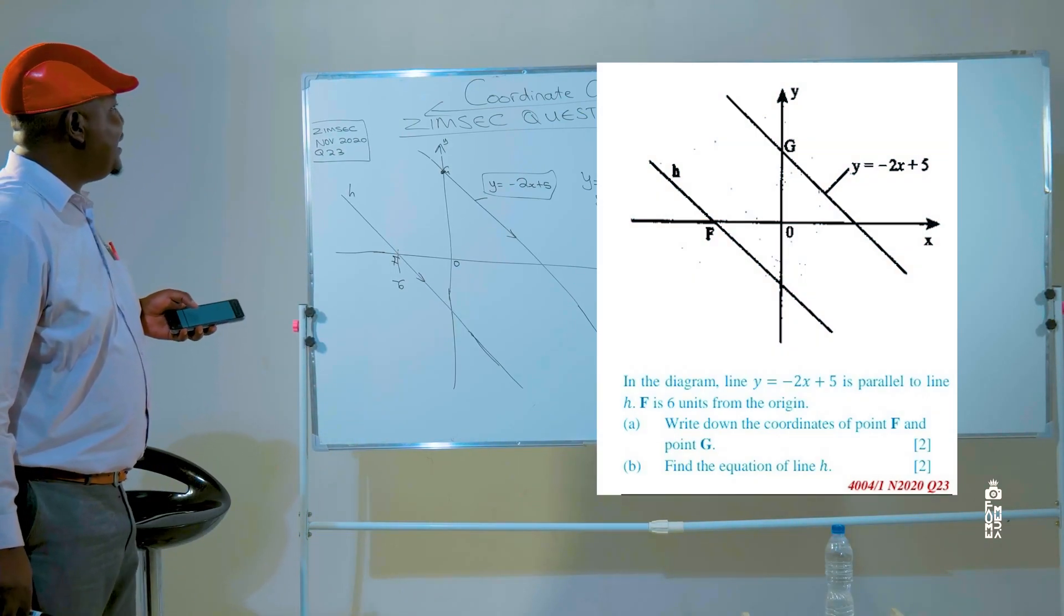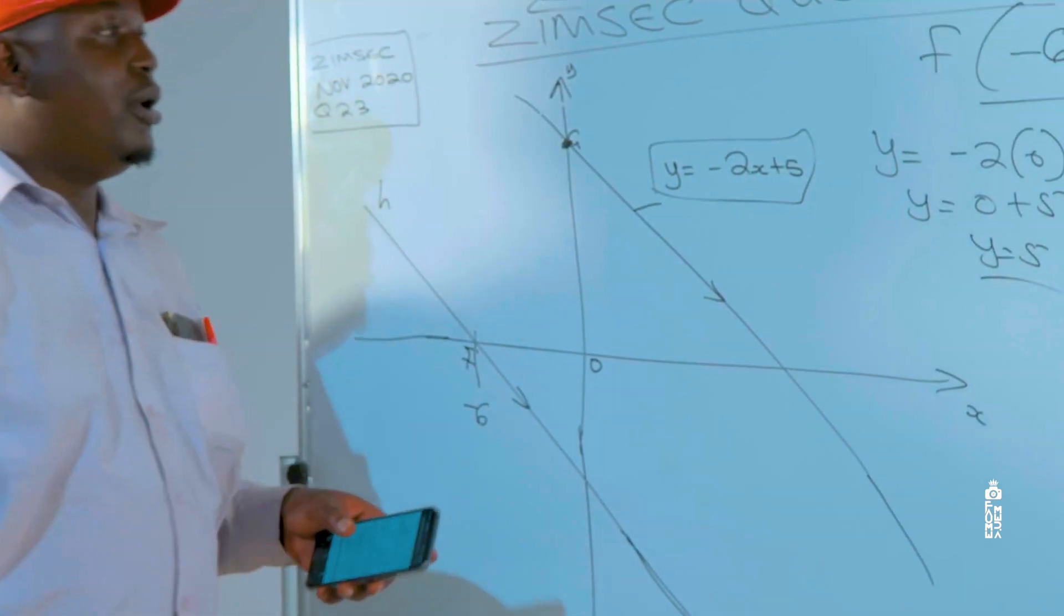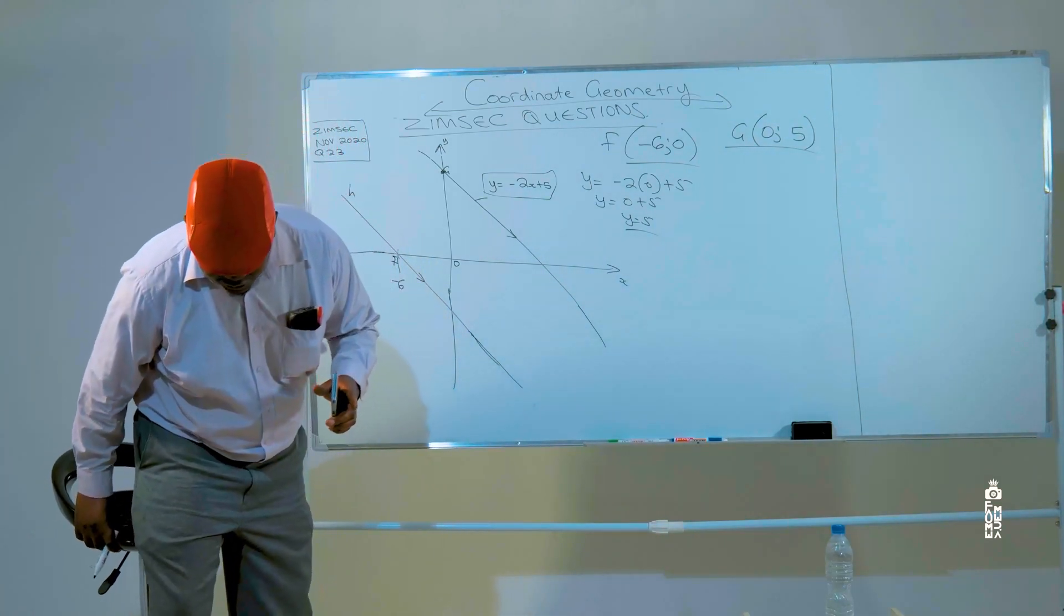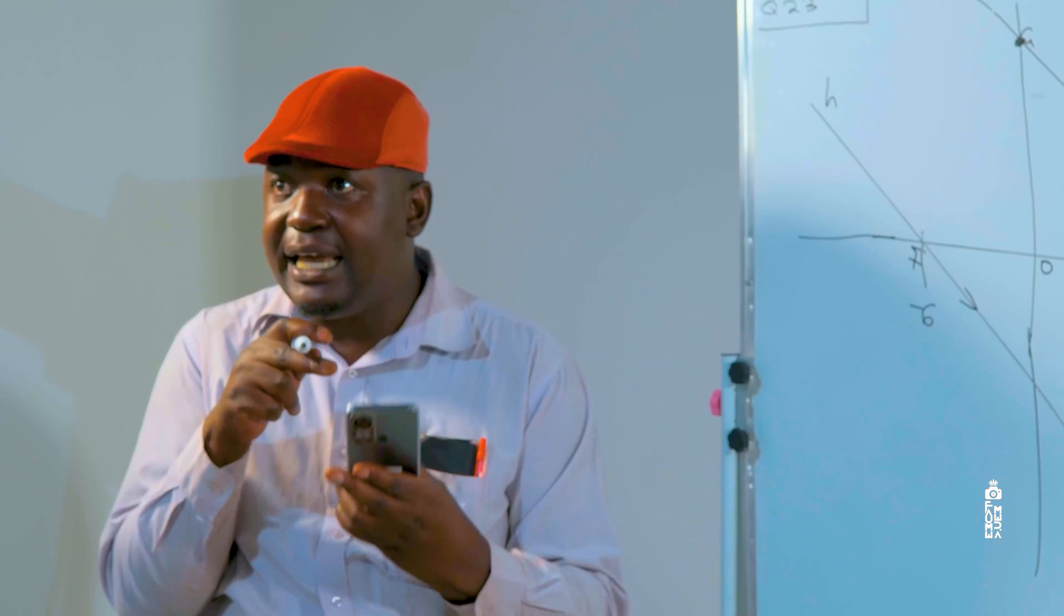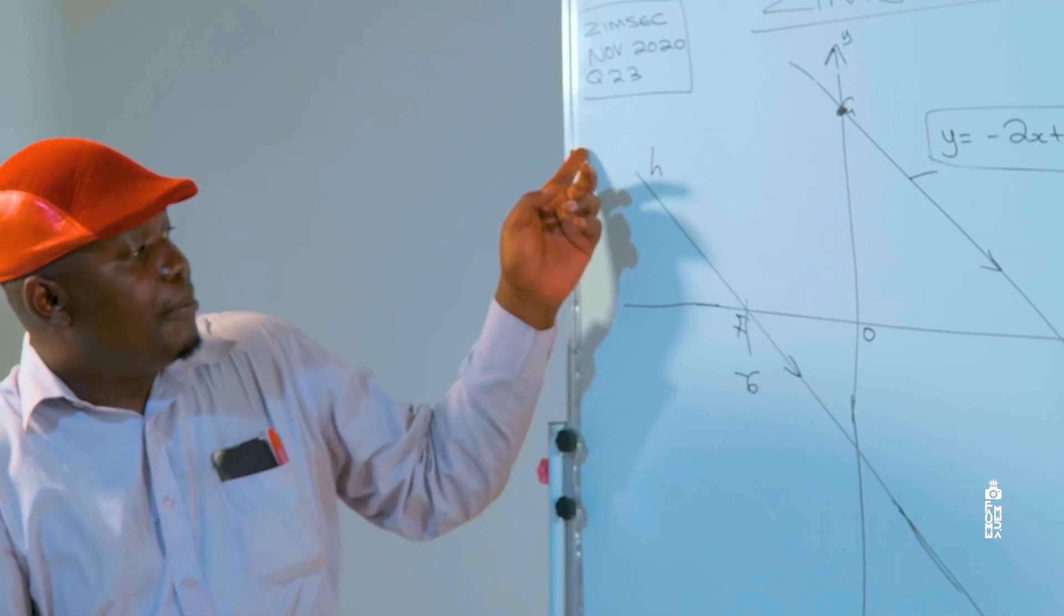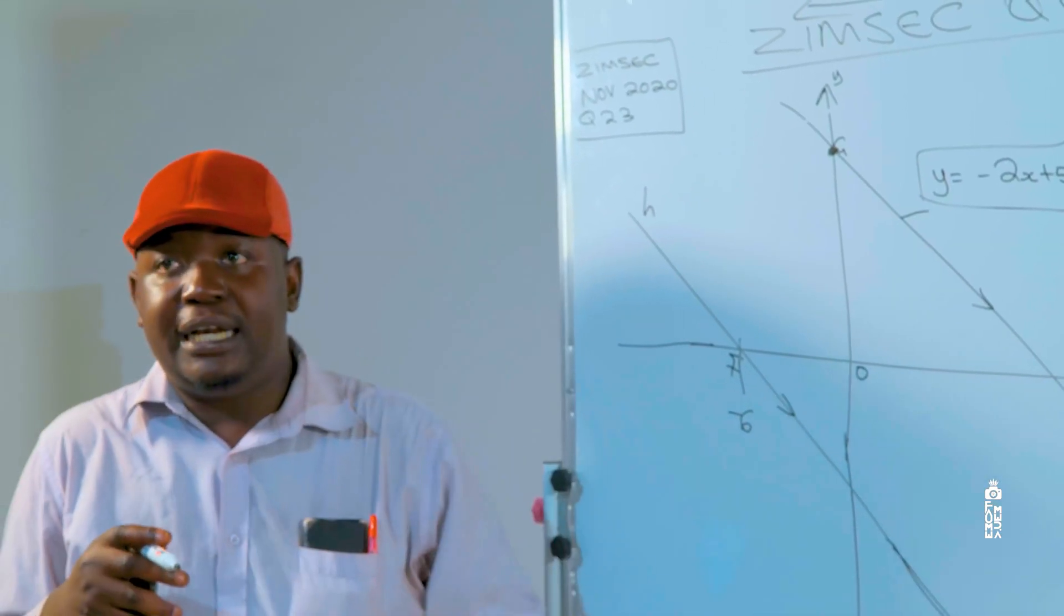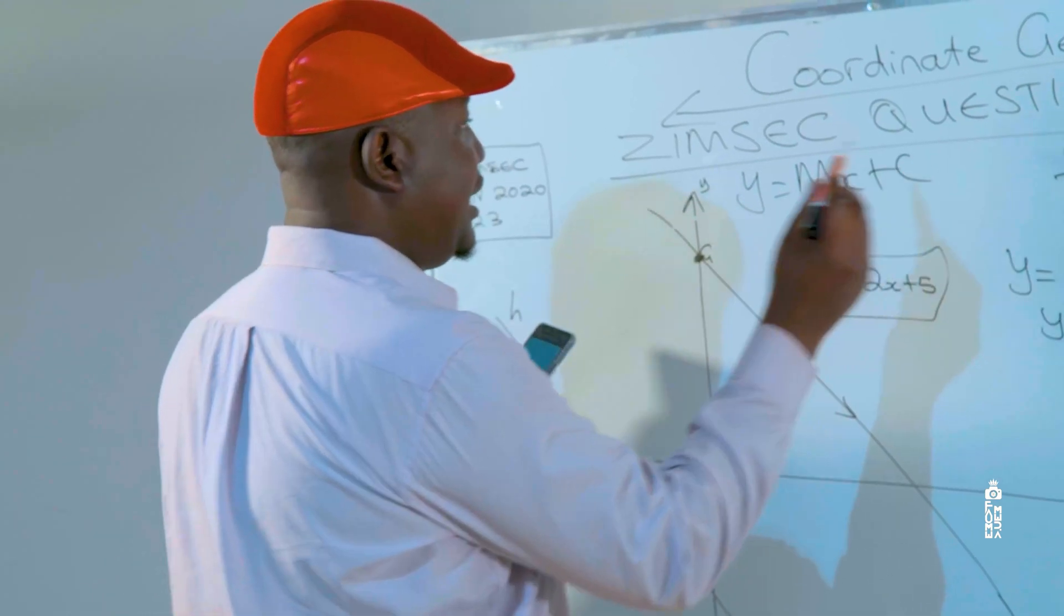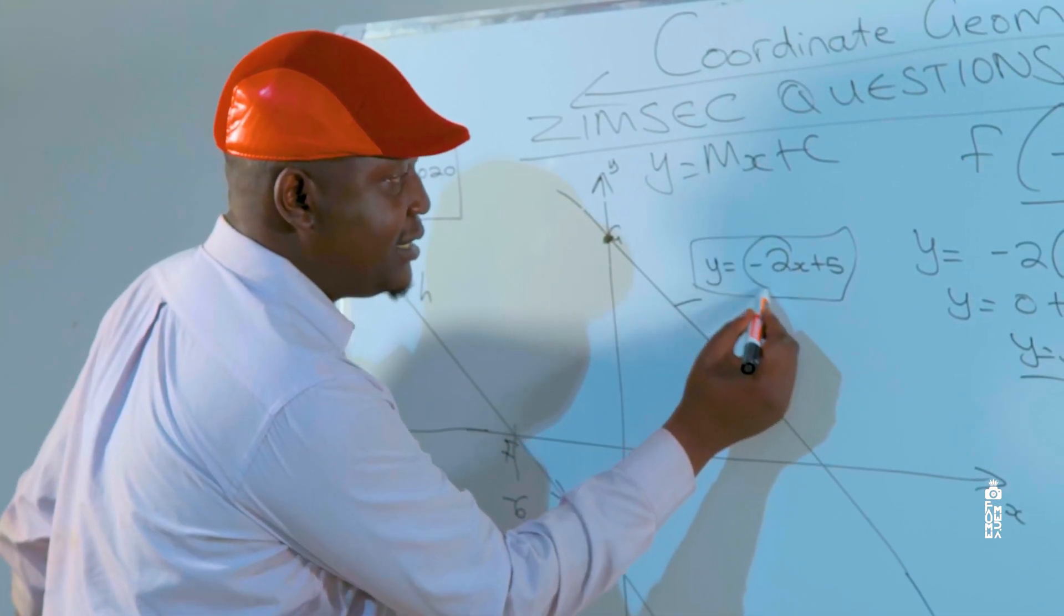Let's look at the next question now. Find the equation of line h, line h which is parallel to line g. For you to be able to know the equation of a straight line graph you need the following things: one, you need to know the gradient of that particular line, and then secondly you need to know any one of the points. The gradient of line h, because the gradients of parallel lines are equal, is the same as line g, gradient minus 2.